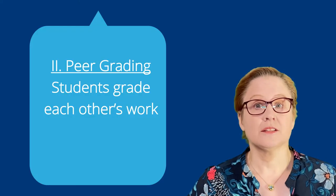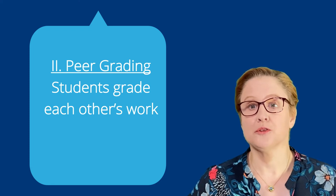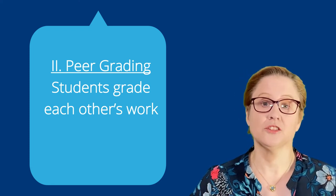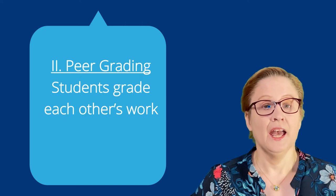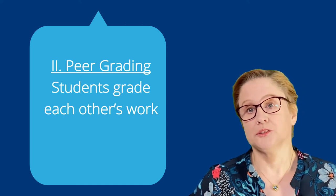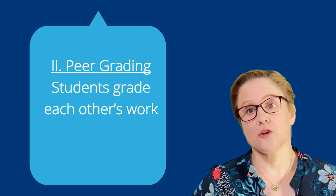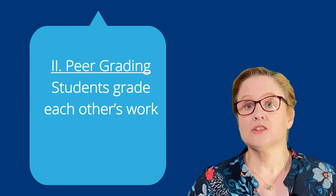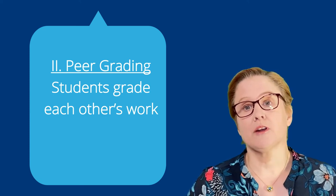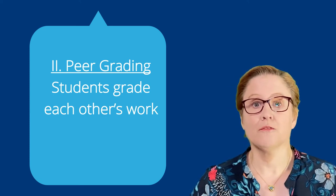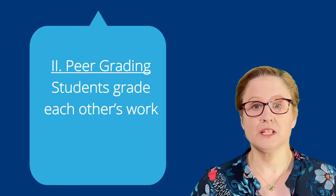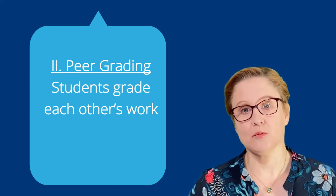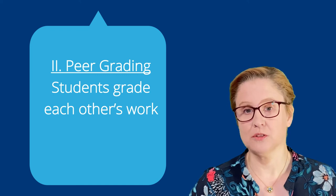The second type is peer grading, where students grade their work in a formative or summative way against a set of given criteria. Examples of these are students grading each other's homework, assignments, or essays. This type of feedback doesn't necessarily require students to give detailed feedback; rather, the feedback is limited to whether the answer is correct or to what extent the student has delivered what was asked based on the given criteria.